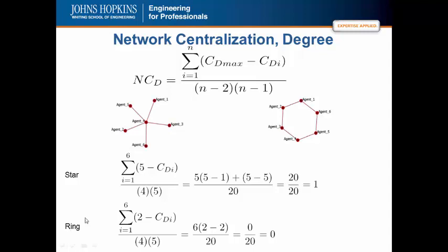If we look at the ring network, we also have a sum from 1 to 6. In this case, the maximum centrality is 2 and every other centrality value for all nodes in the network are 2. Thus, we have 6 times (2 minus 2), or 0, over 20, which equals 0.